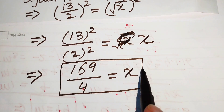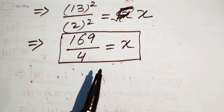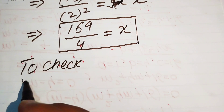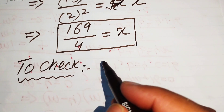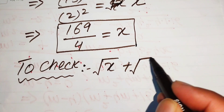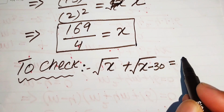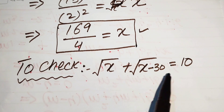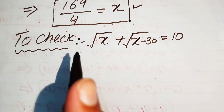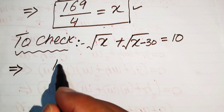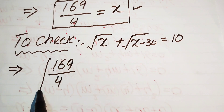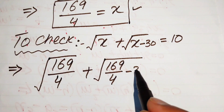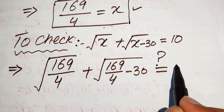Now we verify whether this solution satisfies the original equation. We copy down the given equation: square root of x plus square root of (x minus 30) equals 10. We substitute x equals 169 over 4 into the left hand side and check whether it equals 10: square root of (169/4) plus square root of (169/4 minus 30).